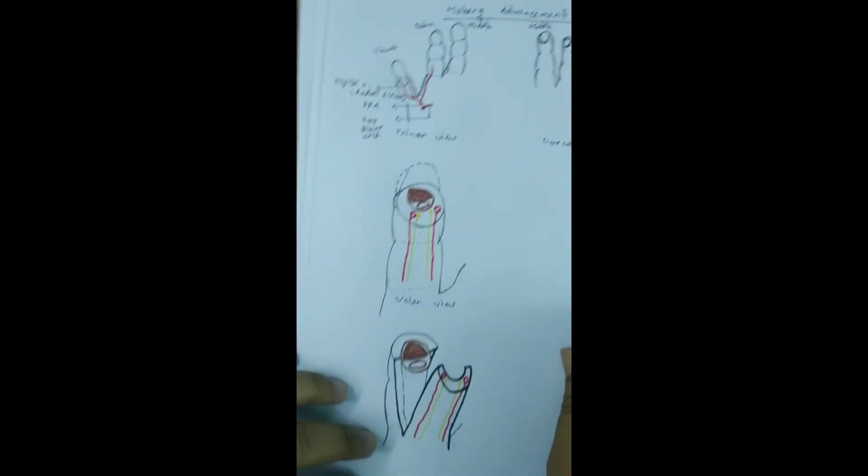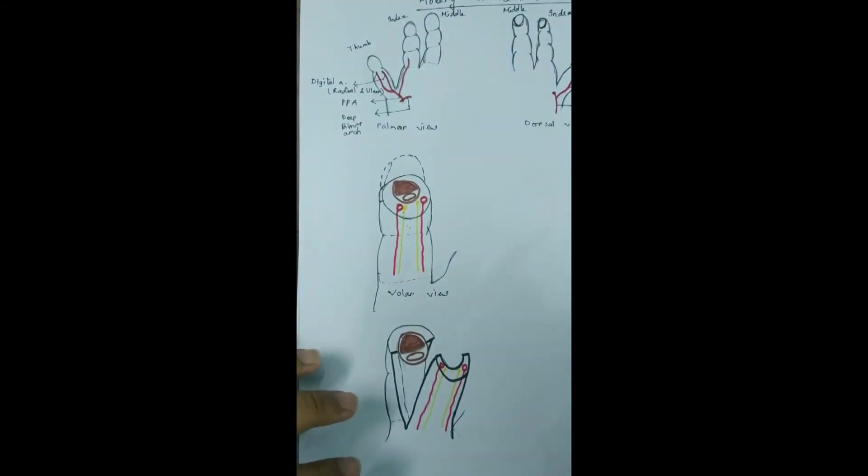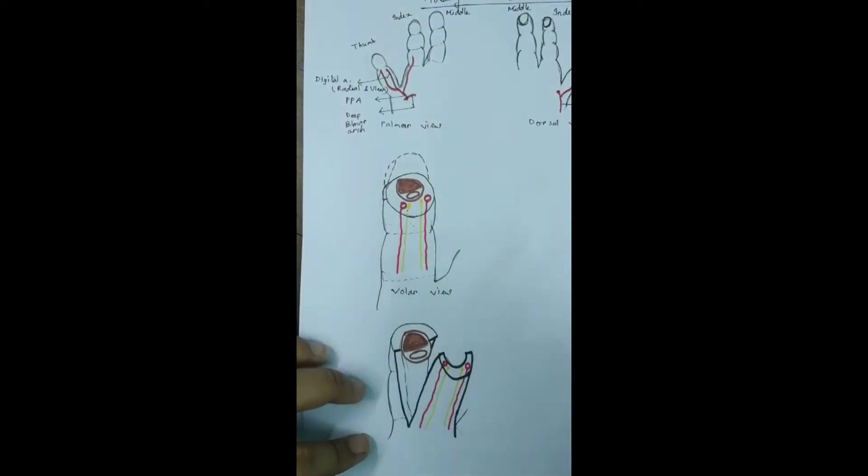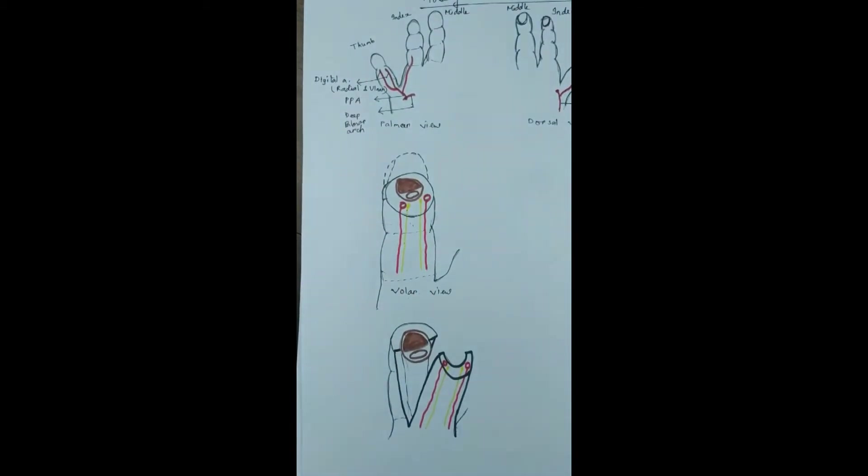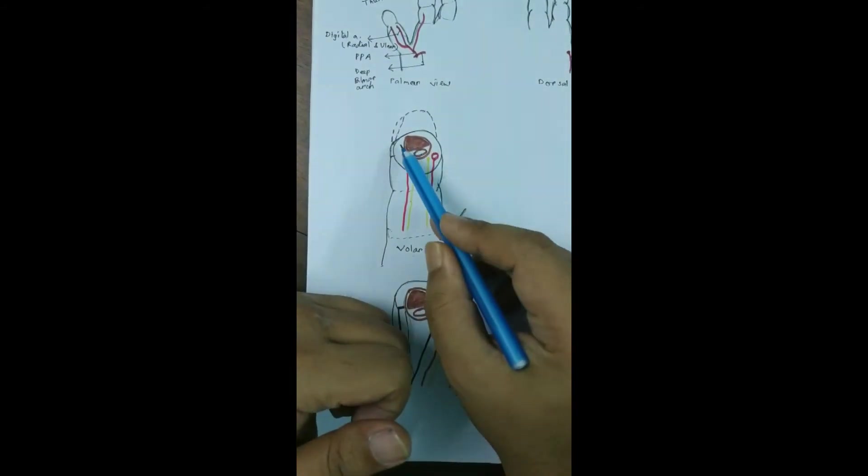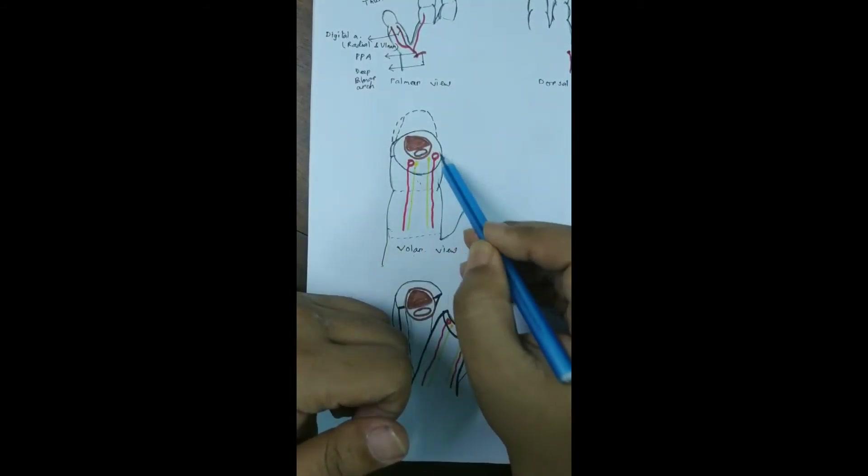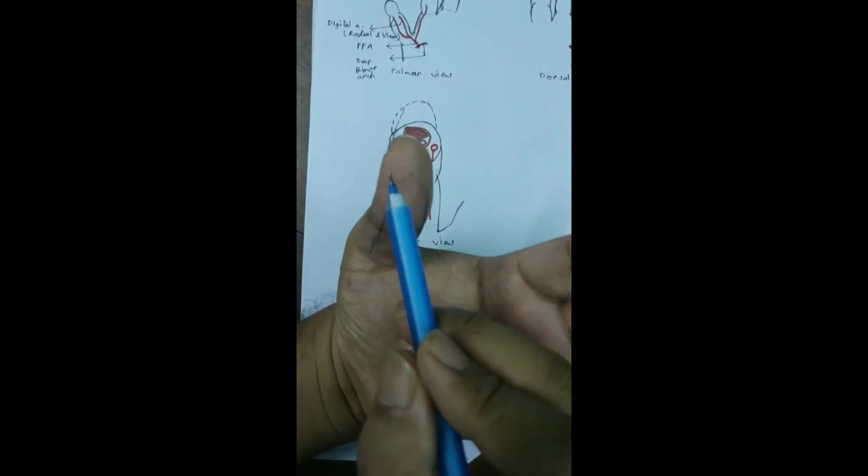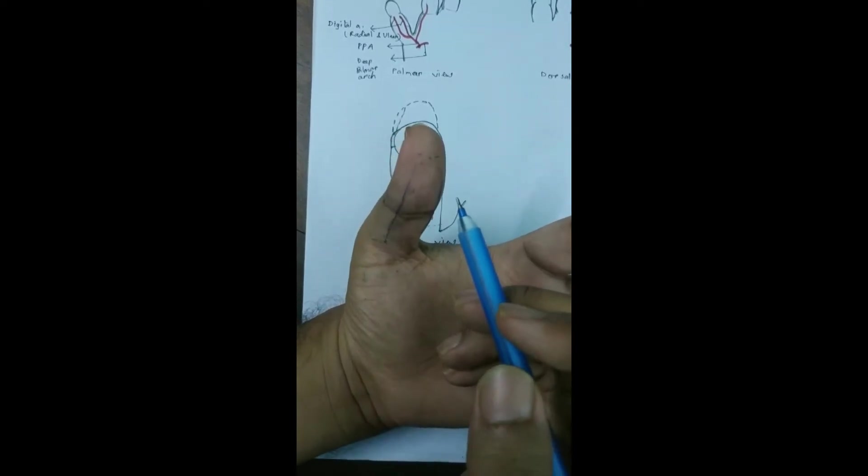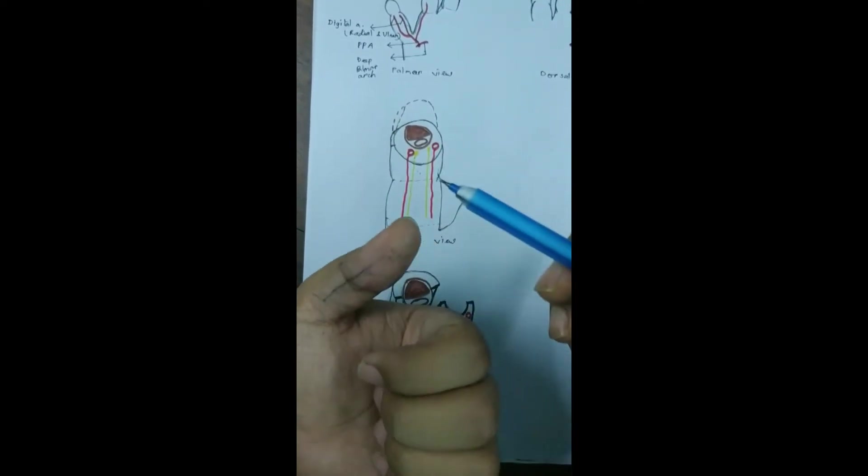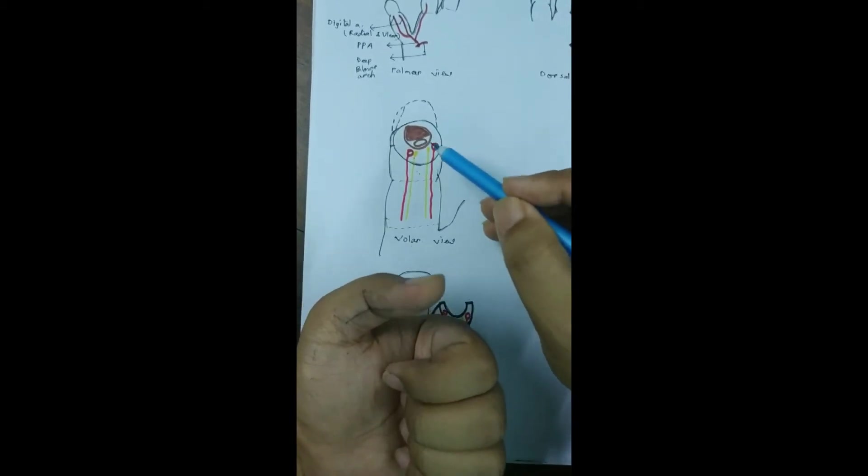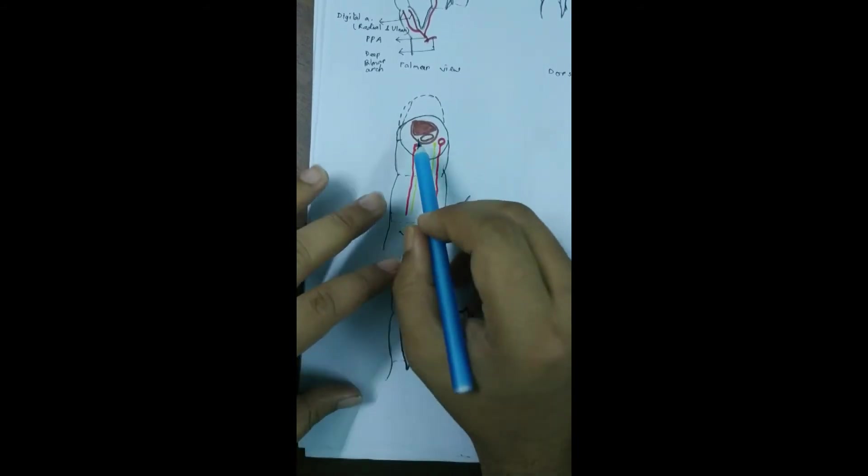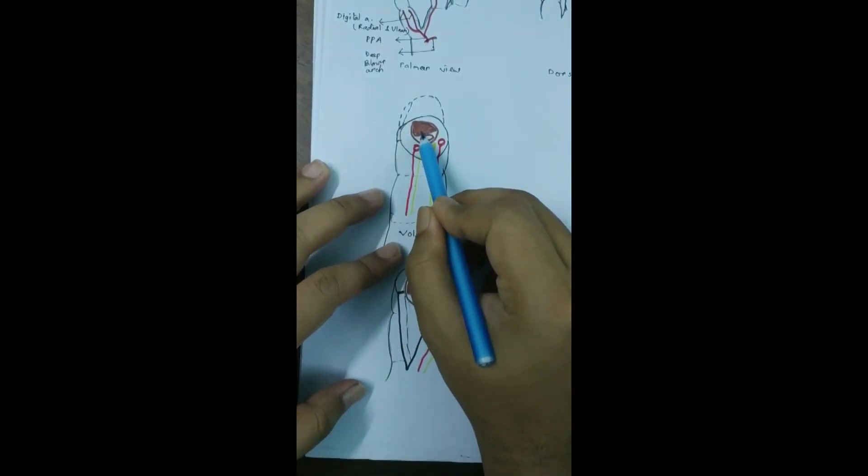We get the digital arteries, and the digital nerve should be just volar to the digital arteries. Now we assume that there is a defect at the tip of the thumb, and we can cover up to 1 to 2 centimeters of the defect with this flap.